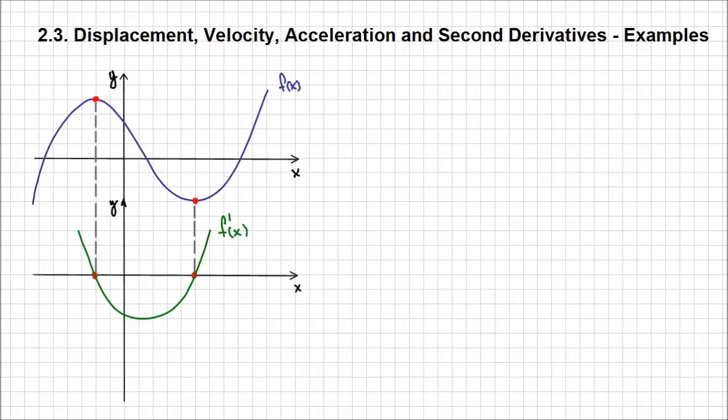This is basically how you determine the graph of a derivative: identify the points where the slope is zero on the function to find the x-intercepts of the derivative, use the information about polynomial degree reduction through differentiation, and knowing the basic shapes of functions, you can easily sketch the graph of the derivative.